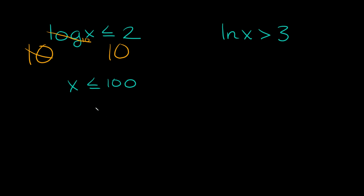One thing you want to look out for with logarithmic inequalities is you can't take the log of a negative number or zero. So our answer — x is less than or equal to 100 — means x could be a negative number. Since we can't take the log of a negative number, we have to restrict this and say x also has to be bigger than zero. So that would be our completed answer.